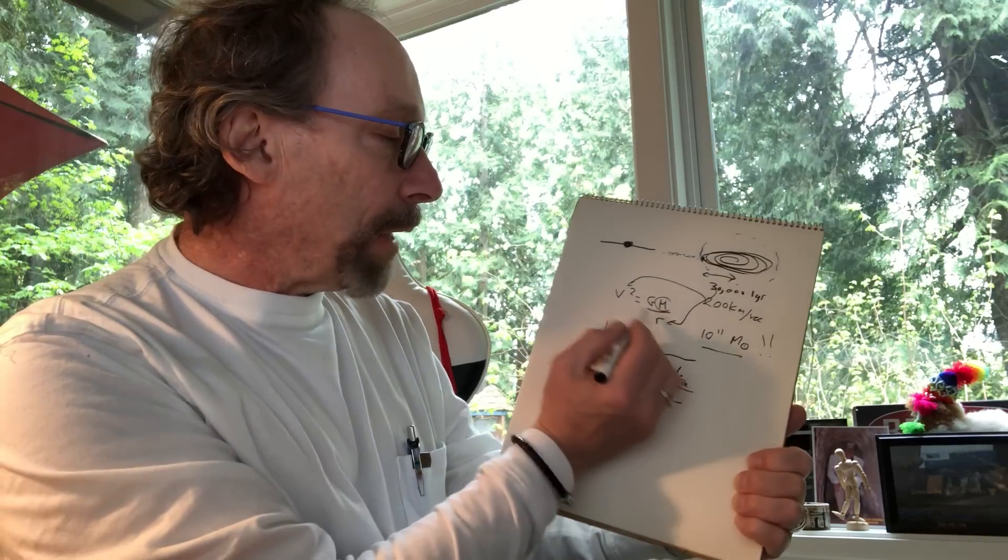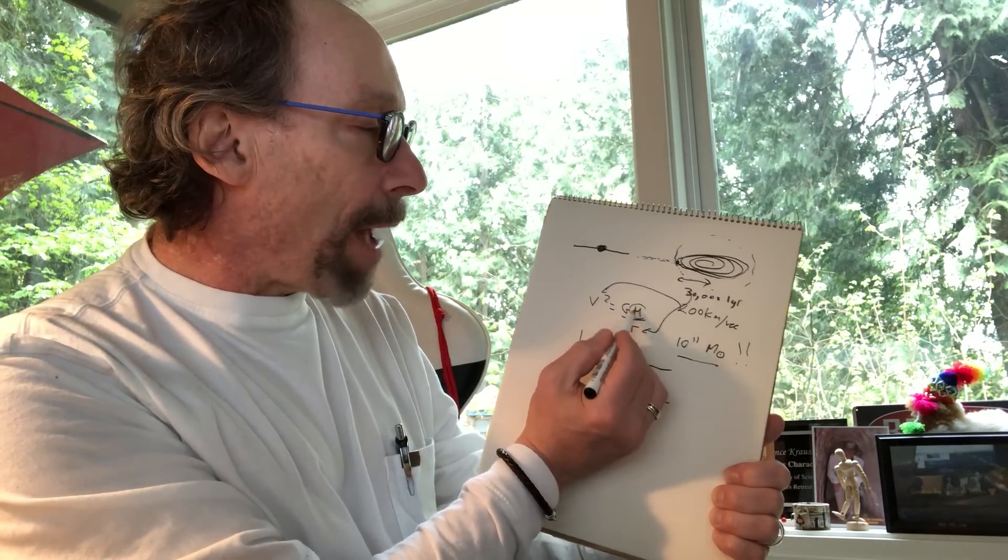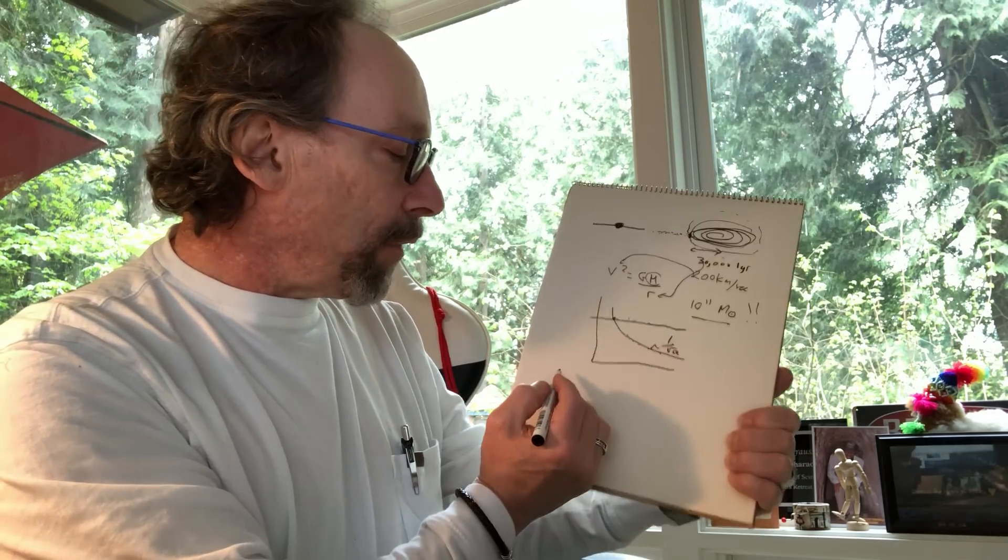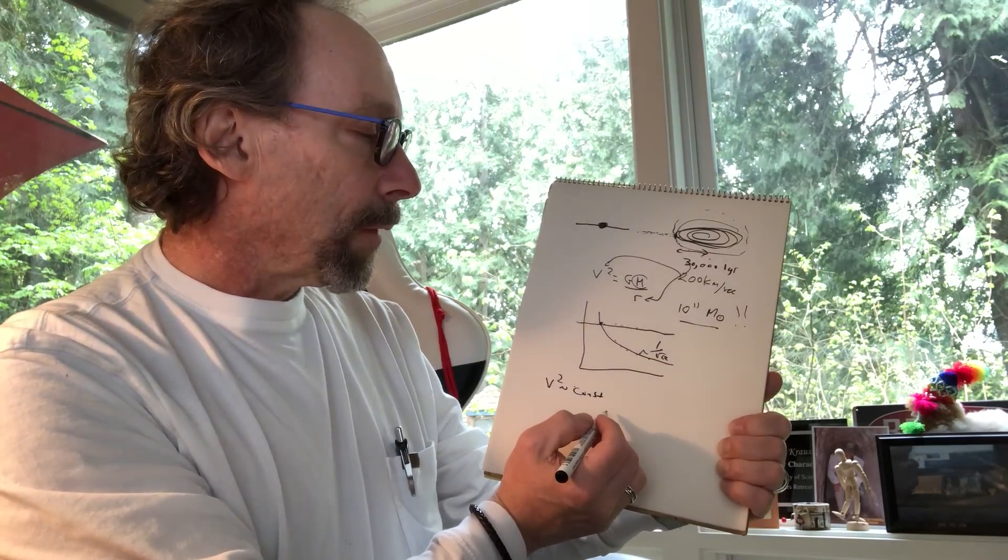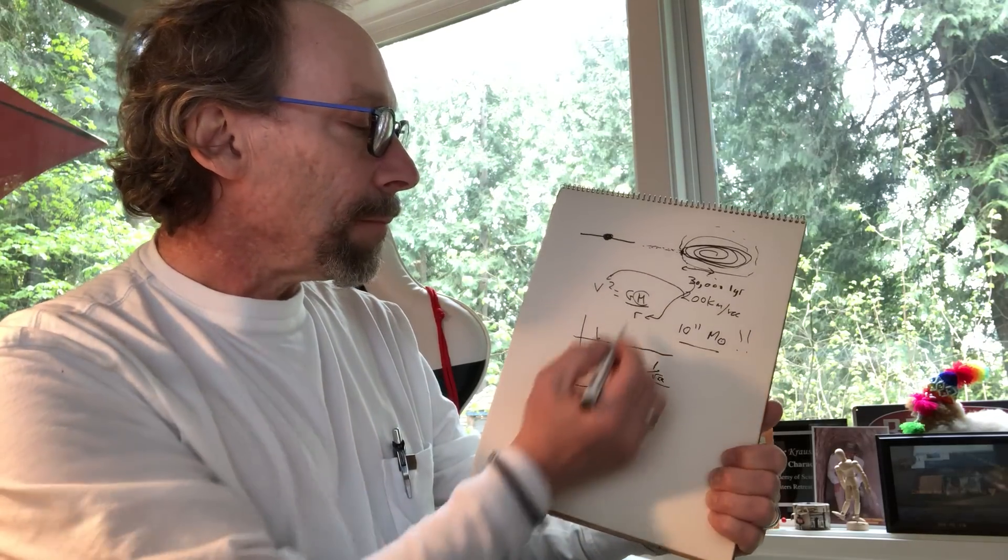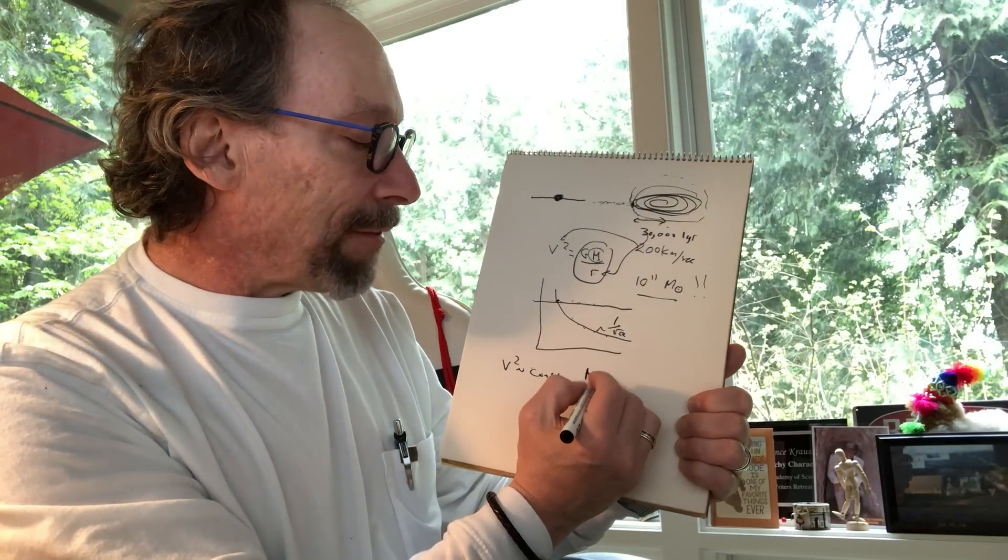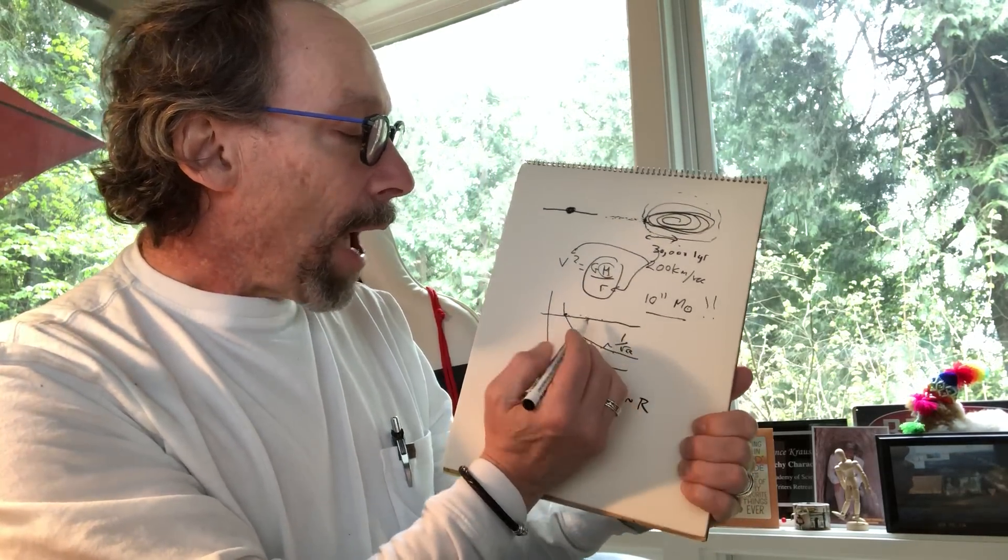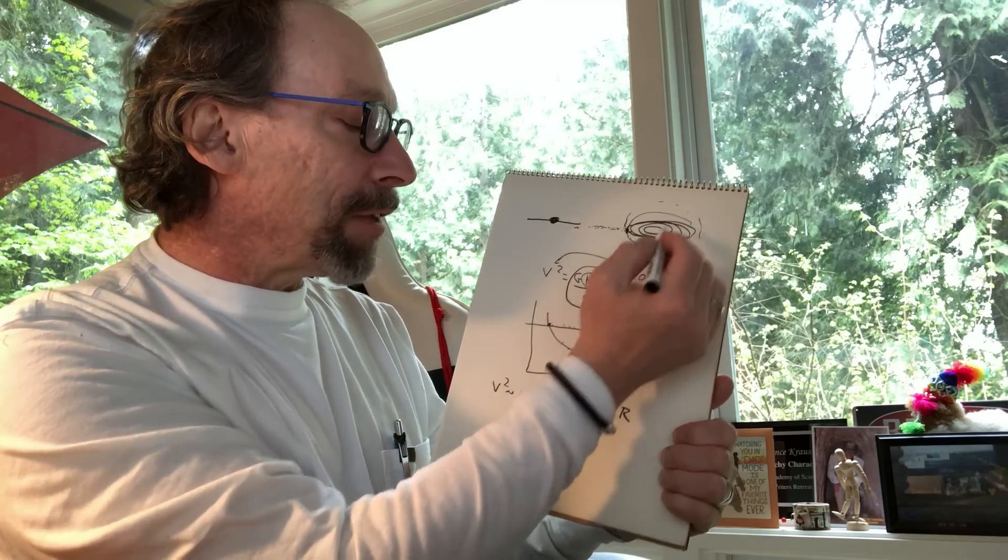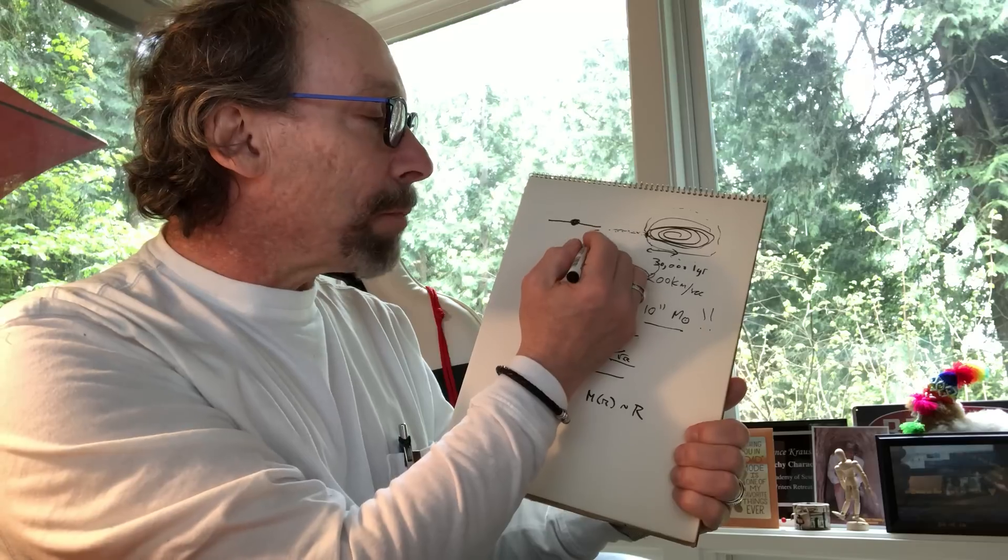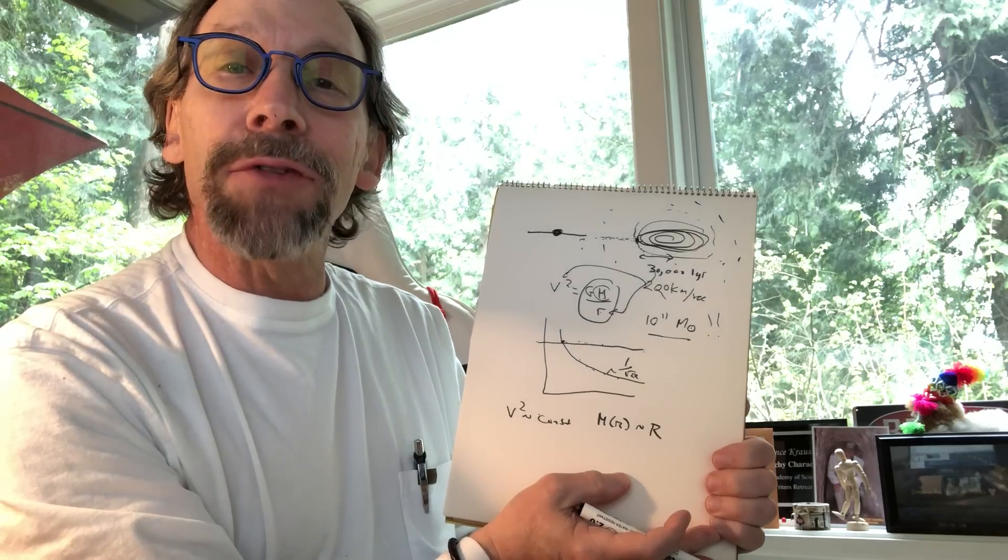How could that be? V squared should fall off as 1 over r if all the mass of the galaxy was contained in this region. Instead v was going like a constant. Well the only way this quantity could remain constant is if m goes like r. So the mass of our galaxy increases like r out to distances 10 times as far away as the sun. But since all the visible mass is in here, this implies there's 10 times as much mass in a halo around our galaxy. This was the first indication in the 1970s of dark matter.